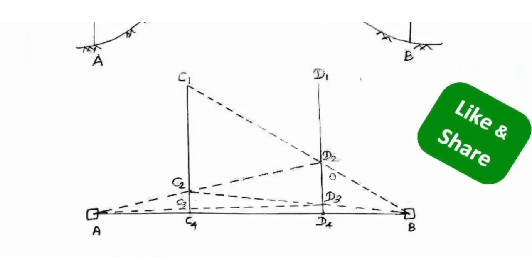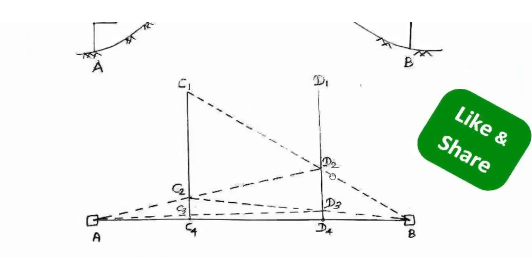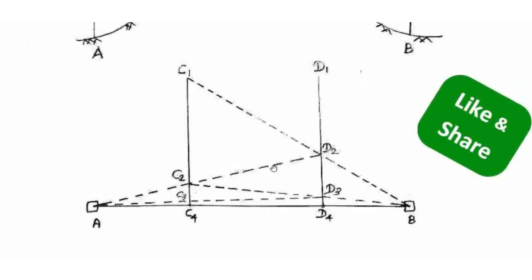In direct ranging, a minimum of 3 ranging rods are required — two at the end stations and one at the intermediate point. In indirect ranging, a minimum of 4 ranging rods are required.